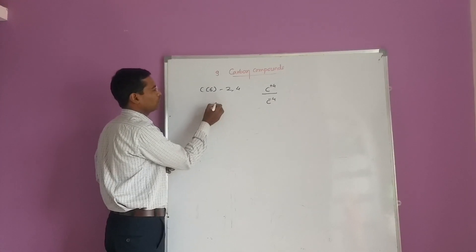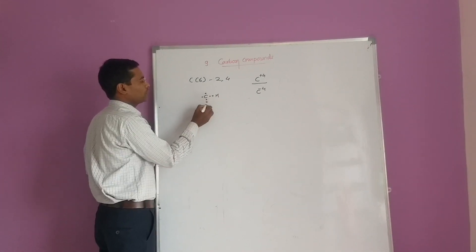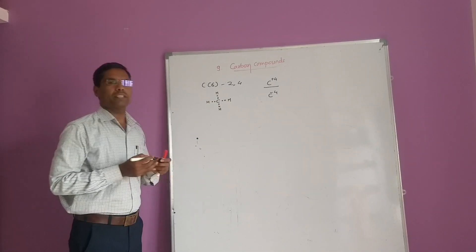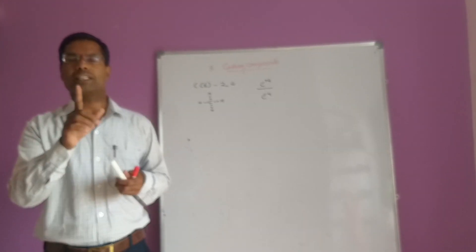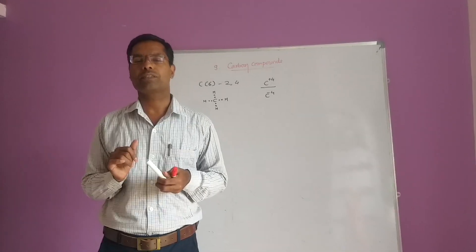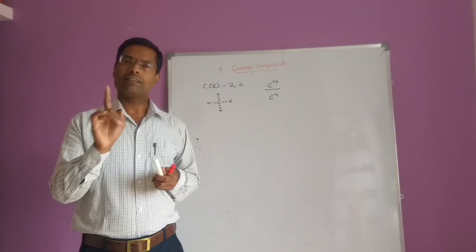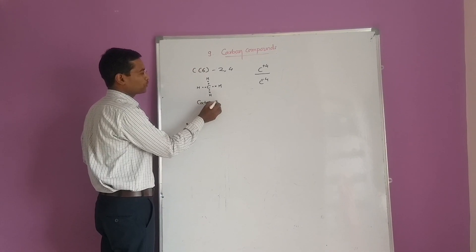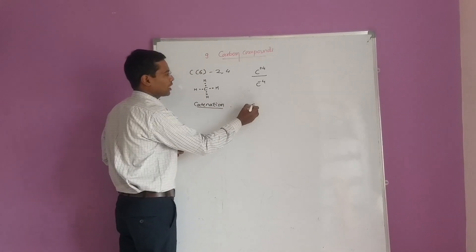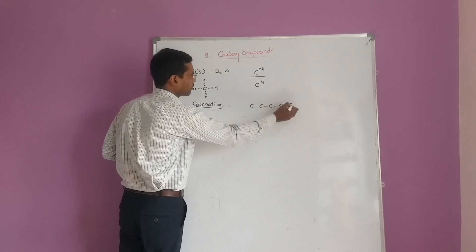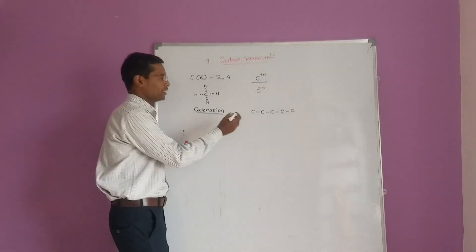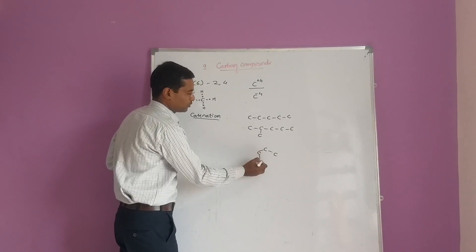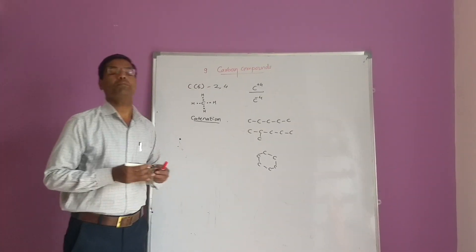Carbon prefers to share electrons. When carbon shares electrons, it can form compounds. The simplest hydrocarbon, methane, exhibits tetravalency - carbon is tetravalent, meaning at a time it can form 4 bonds. Carbon also has another important property called catenation: the property to form long chains. Carbon combines with other carbon atoms to form long straight chains as well as branched chains and cyclic compounds.